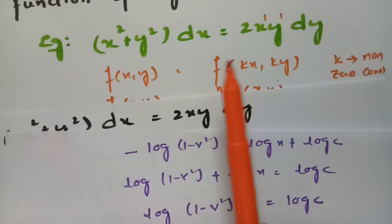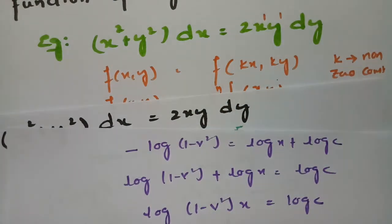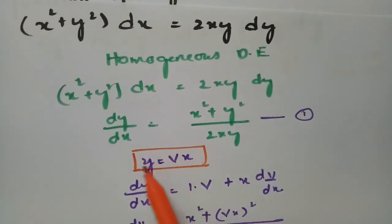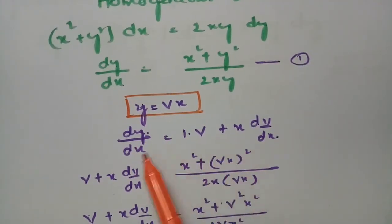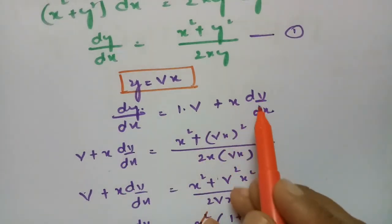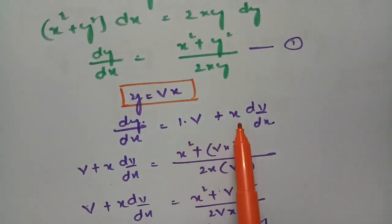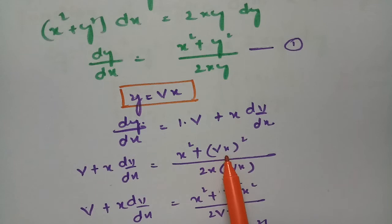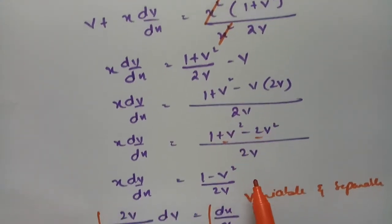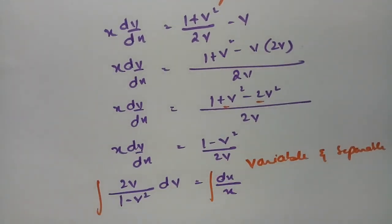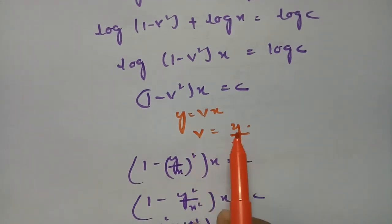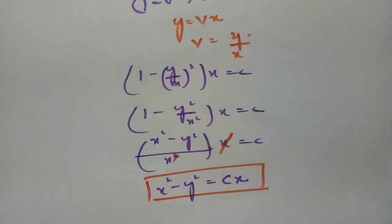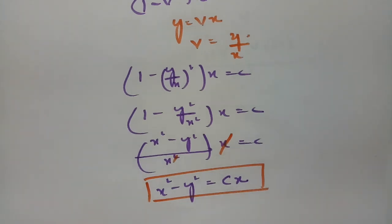To summarize the process: first check for equal degree uniformity to confirm it's a homogeneous differential equation. Then substitute y = vx (or x = vy for the other case). Differentiate to get dy/dx = v + x·(dv/dx), substitute into the equation, separate variables, integrate both sides, and back-substitute v = y/x to express the answer in terms of x and y. The final answer here is x² − y² = cx. Thank you for watching!